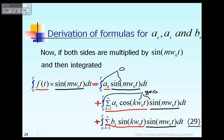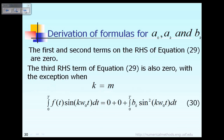The last term of equation 29 on the right-hand side has the integral of b_k sin(kω₀t) times sin(mω₀t). So on the right-hand side, all you have is that last term. The last term is also equal to zero, unless k equals m. In that case, the last term of the right-hand side is not equal to zero.